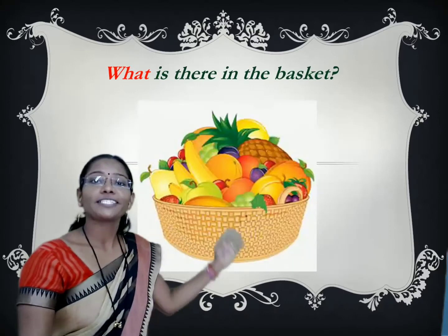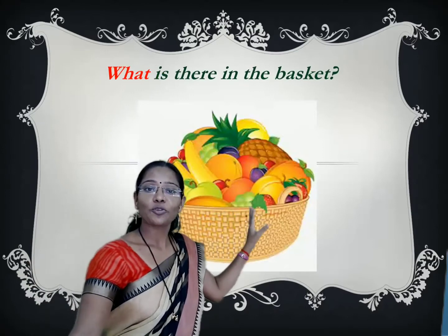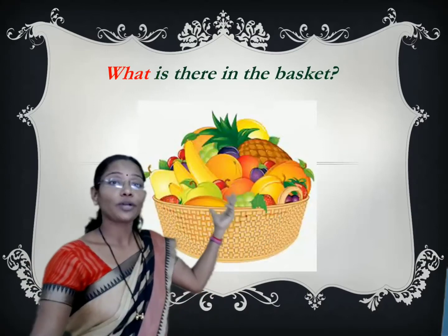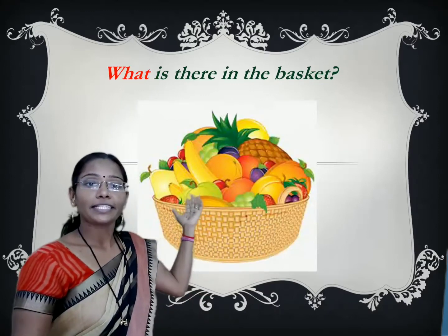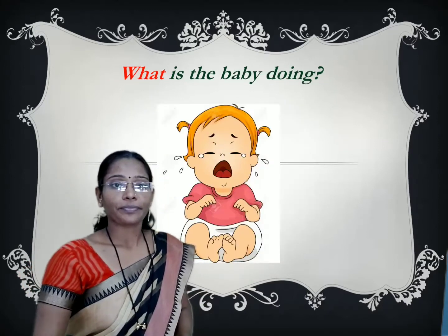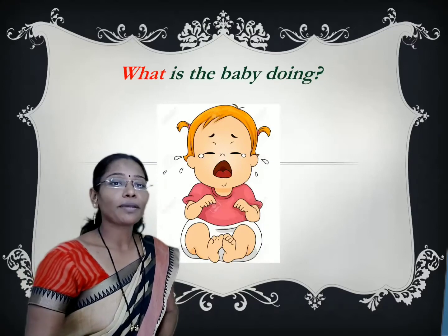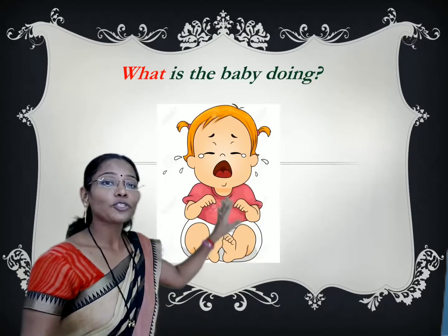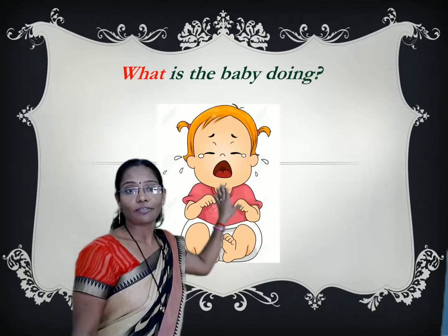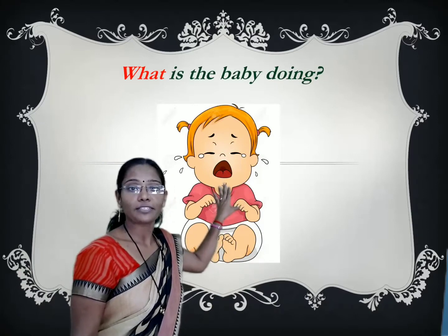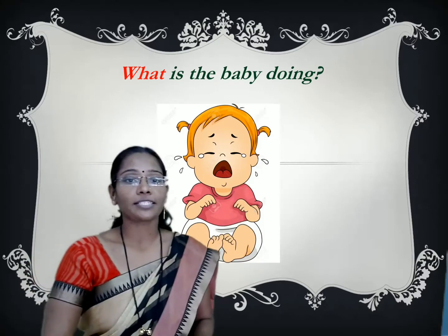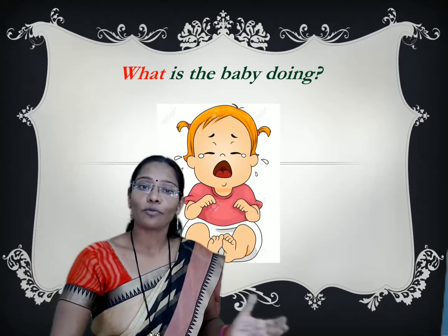Here, 'what is there in the basket?' This question is for fruits — fruits, flowers, or anything. If we want to ask a question about that, we can use the question word 'what'. Here, 'what is the baby doing?' means we want to know the action of this baby, what activity is going on. To ask about an action, we can use the question word 'what'.